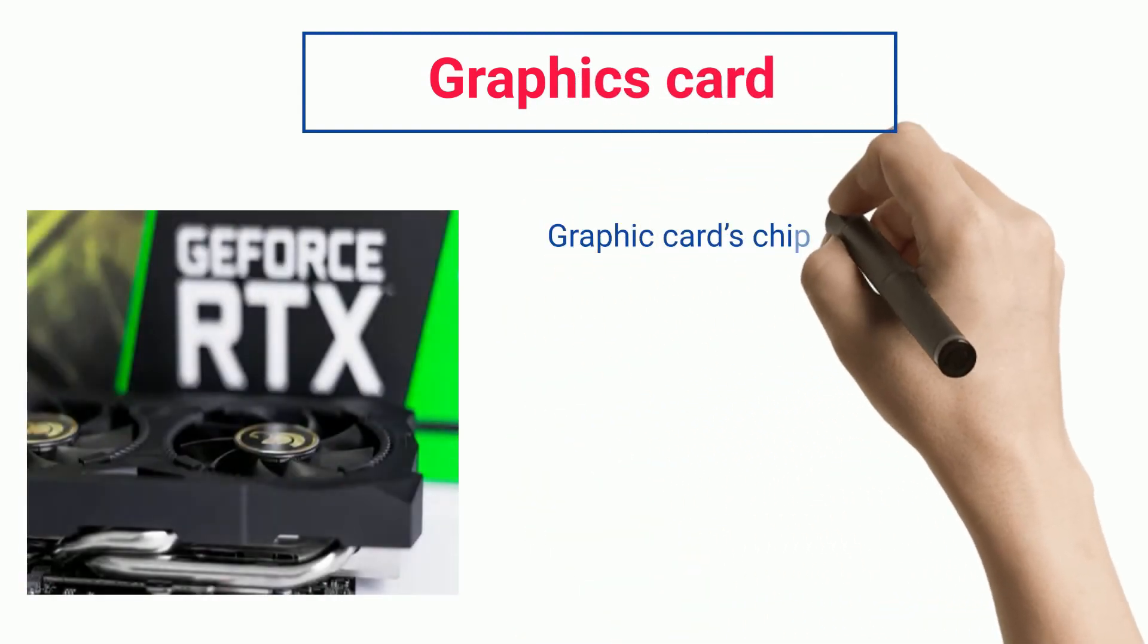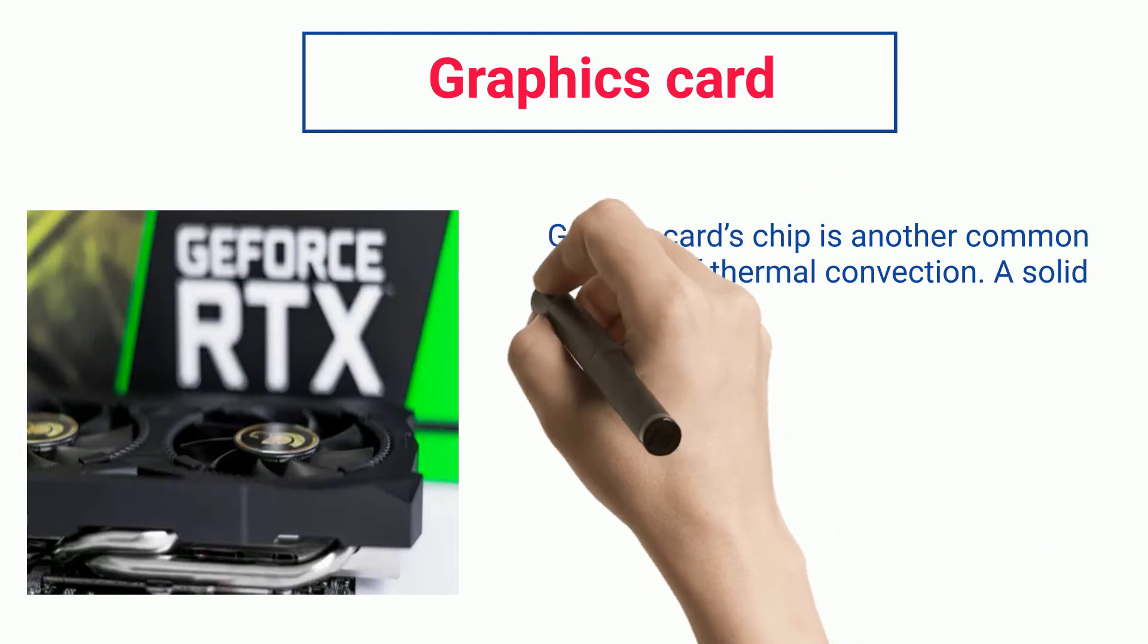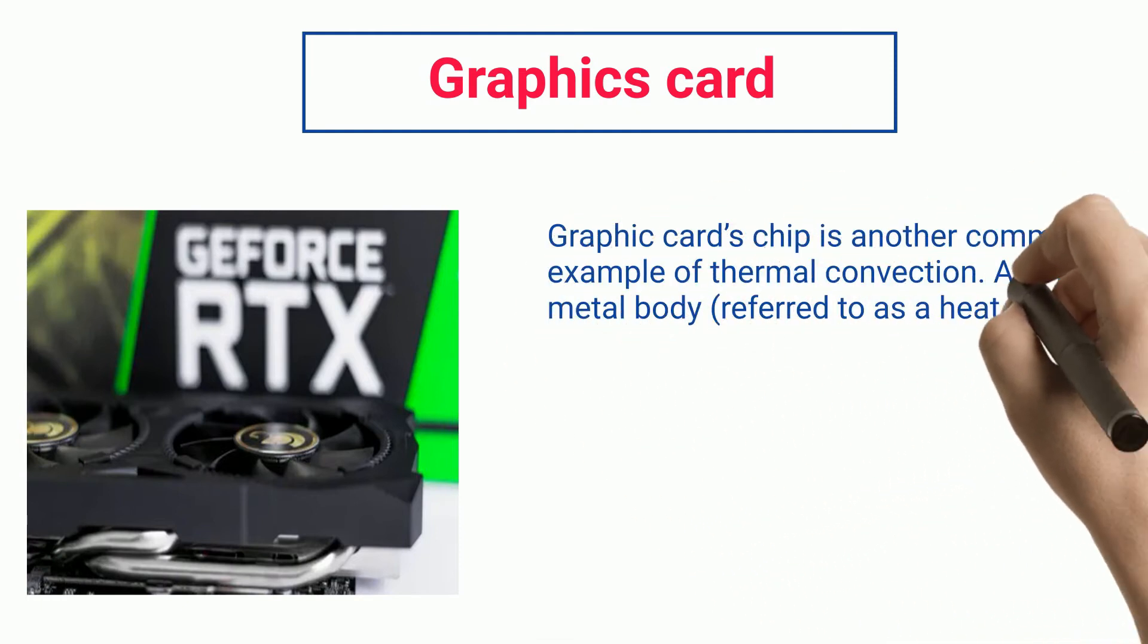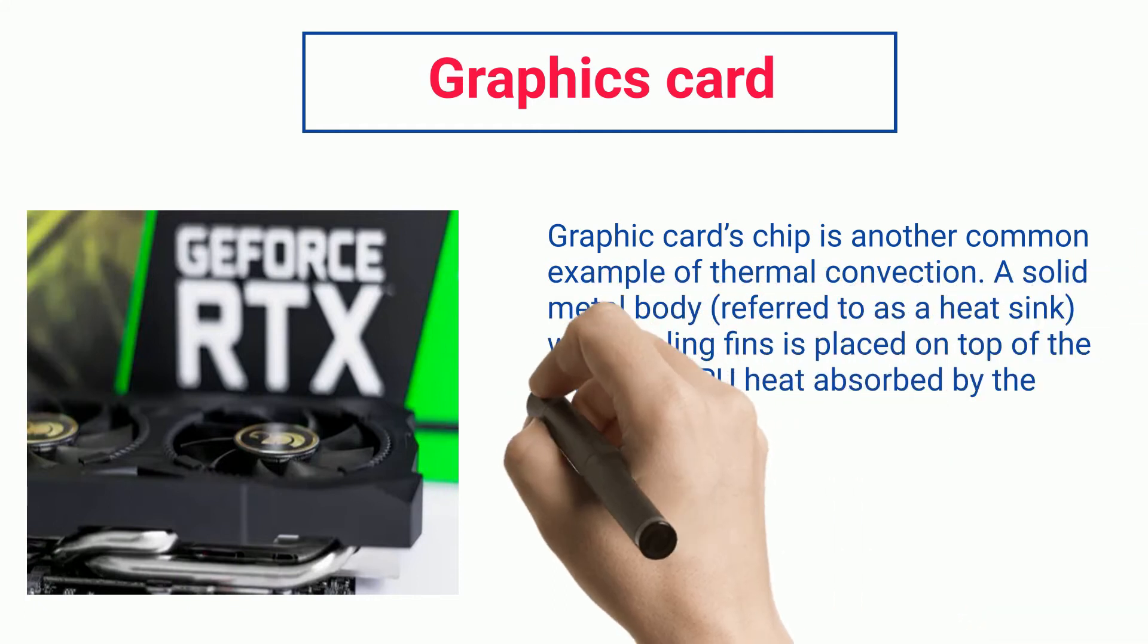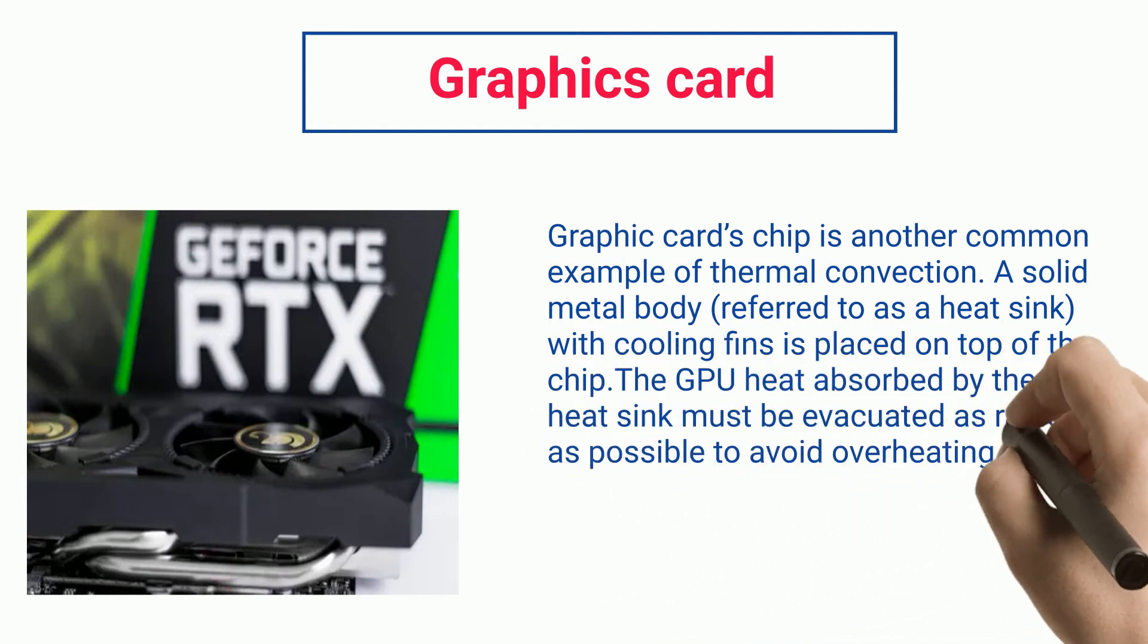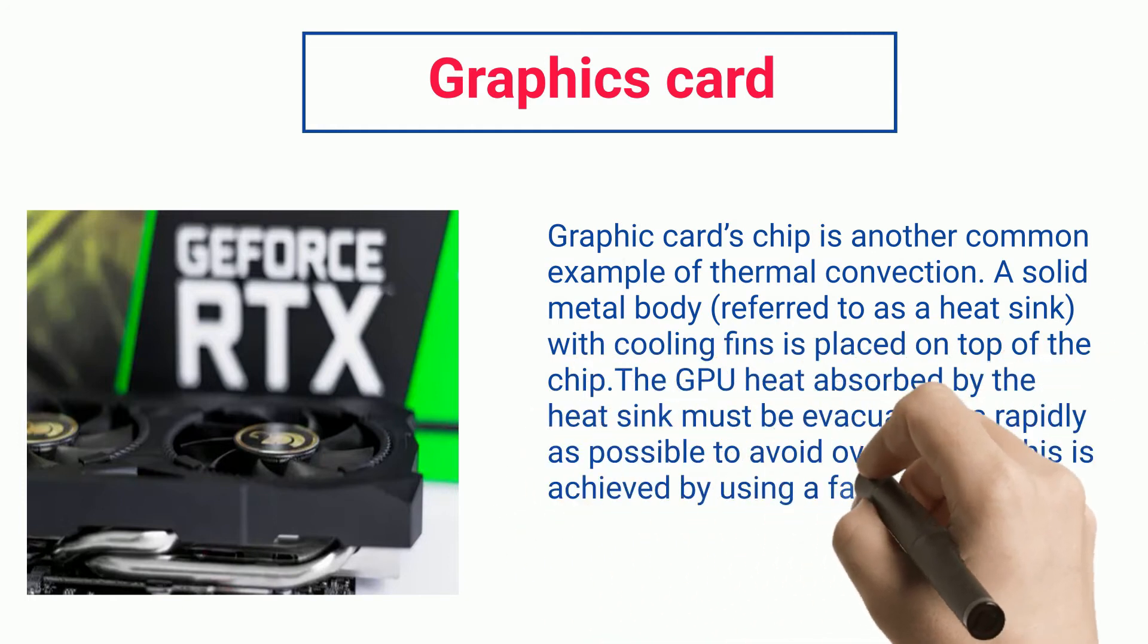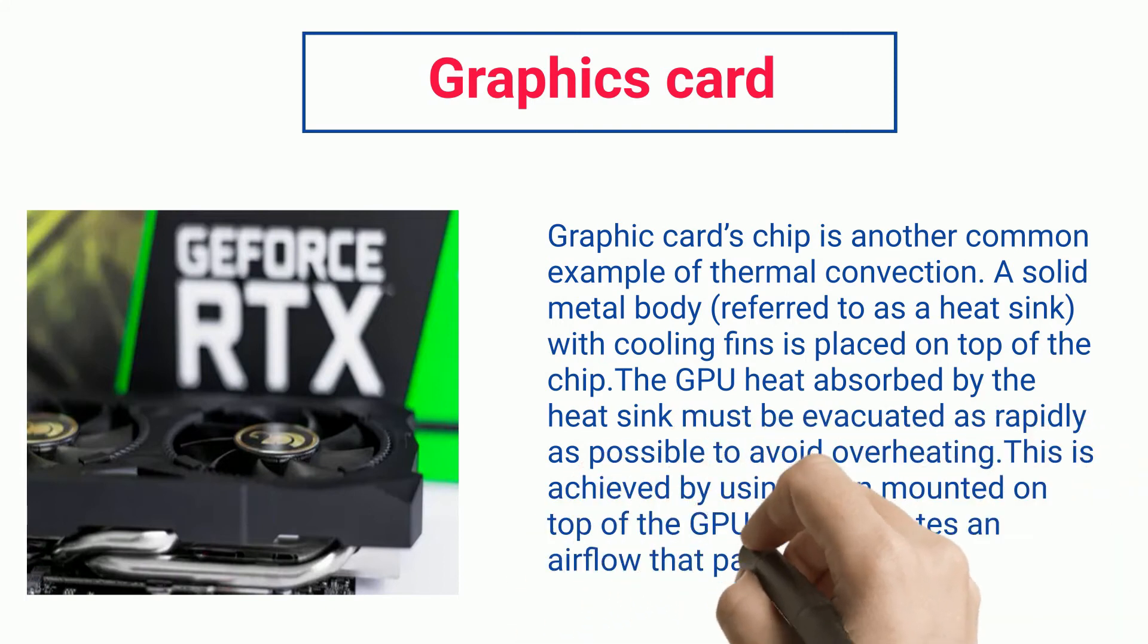Graphics card: A graphic card's chip is another common example of thermal convection. A solid metal body referred to as a heat sink with cooling fins is placed on top of the chip. The GPU heat absorbed by the heat sink must be evacuated as rapidly as possible to avoid overheating. This is achieved by using a fan mounted on top of the GPU that generates an airflow passing through the cooling fins.